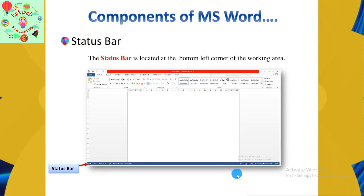The last component is the Status Bar, located at the bottom left corner of the Working Area. It shows the current page, total number of words, and more. The buttons next to it are called View Buttons, which show Print Layout, Read Mode, and Web Layout. The last option is the Zoom Slider, which is used to increase the size and view the working document.